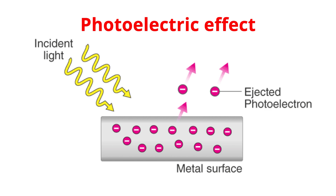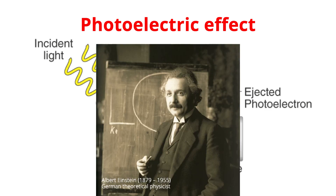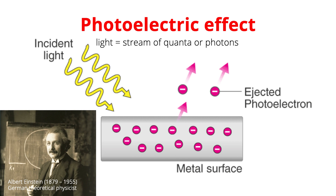A successful explanation of the photoelectric effect was given by Einstein in 1905. Einstein extended Planck's concept of quantization to electromagnetic waves, as in black body radiation. Einstein assumed that light, or any other electromagnetic wave, of frequency F, from any source, can be considered a stream of quanta or photons. Each photon has an energy E equals H F, and each moves in a vacuum at the speed of light C, where C is equal to 3 times 10 to the power of 8 meters per second.